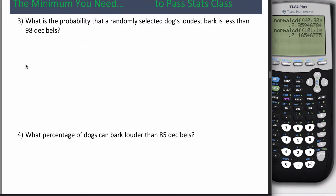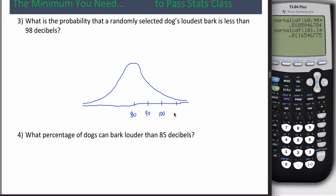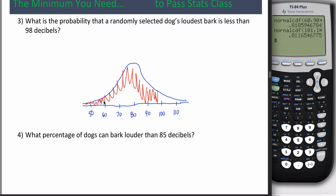I've got two more examples to show you a couple of special cases. What is the probability that a randomly selected dog's loudest bark is less than 98 decibels? You might notice this one is a little different. The earlier problems always gave me both a lower bound and an upper bound, which are the first two arguments for normal CDF. In this case, it appears there's no lower bound. I'll draw the picture first: 98 is right here, and 'less than' means all this area to the left.